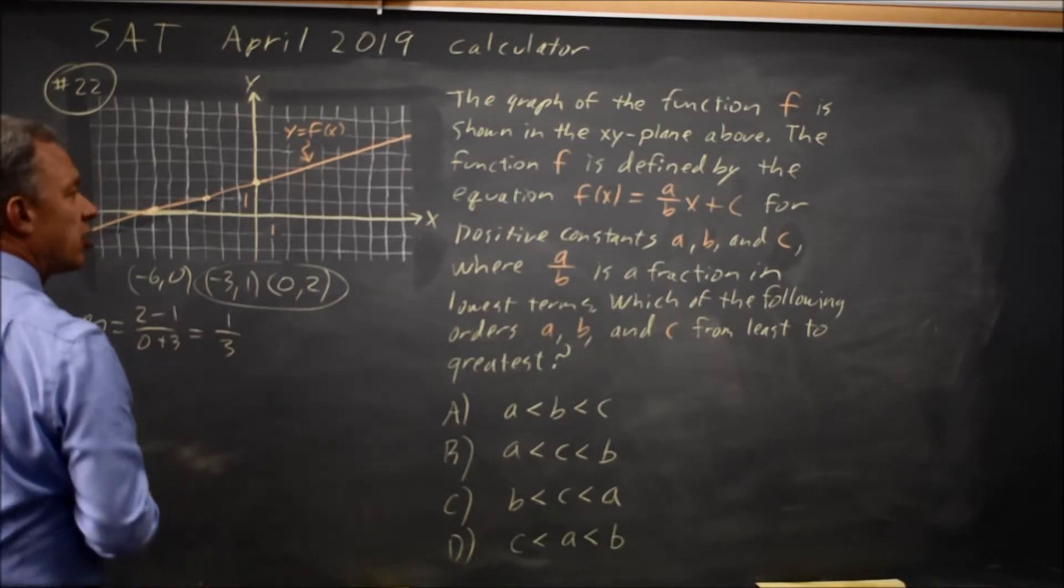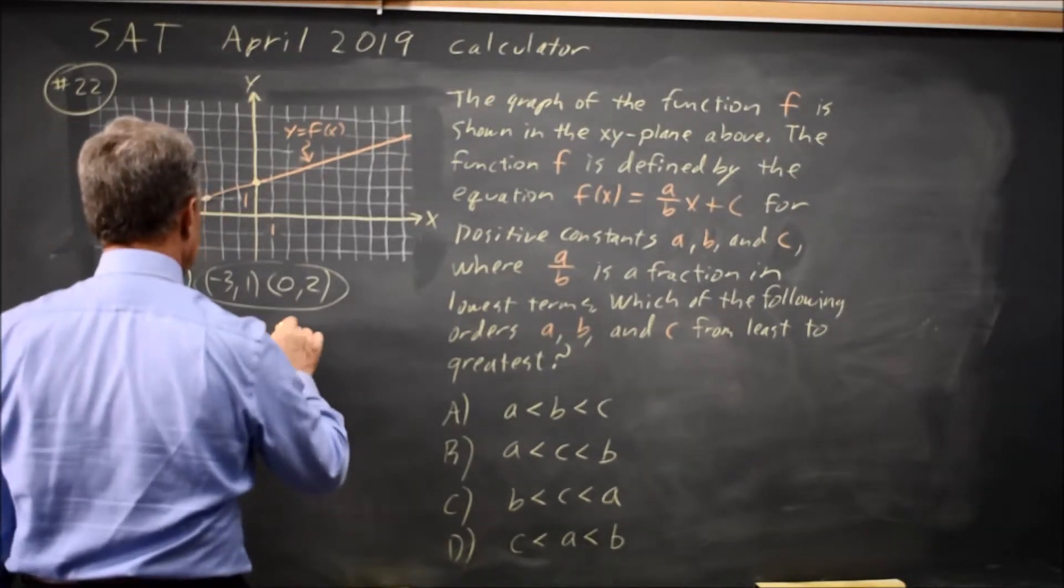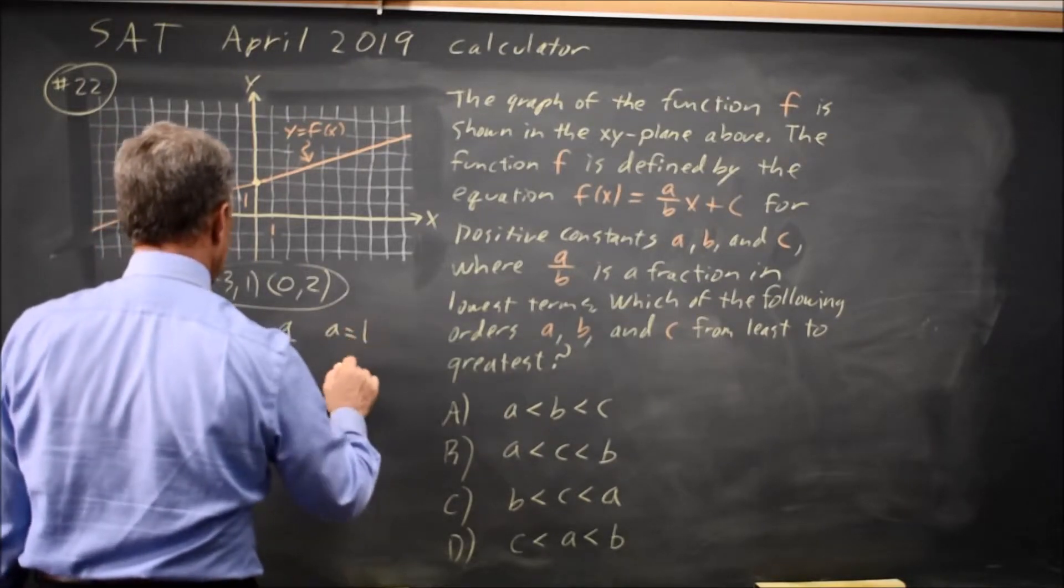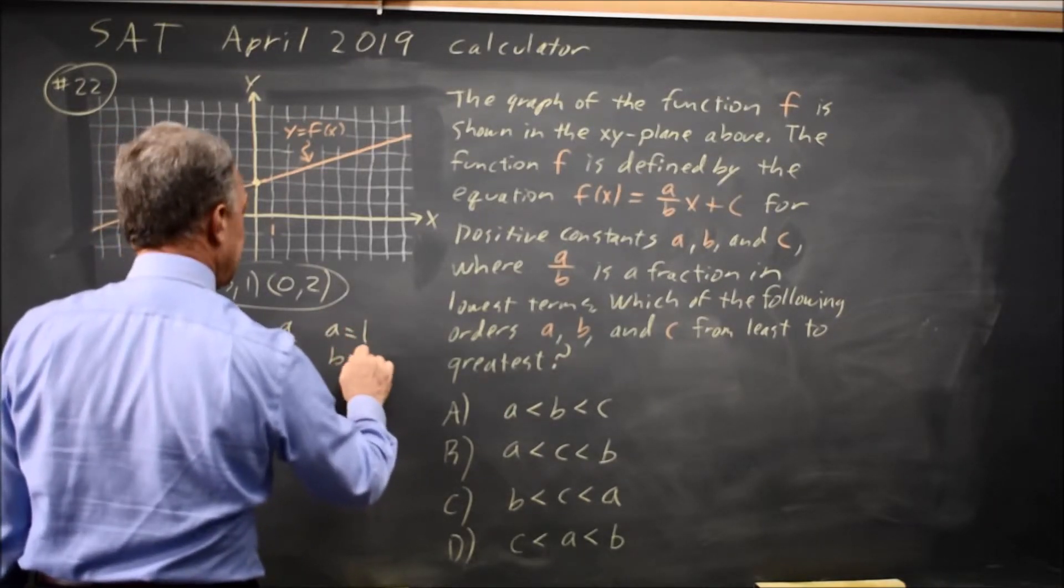Our slope is 1/3, and our slope is a/b, so a equals 1 and b equals 3.